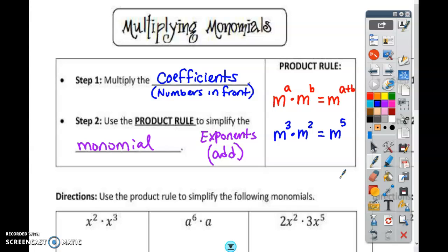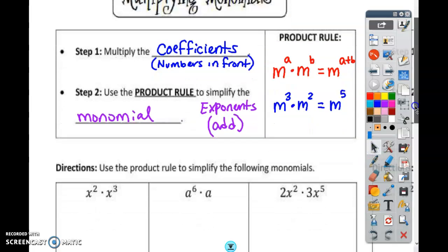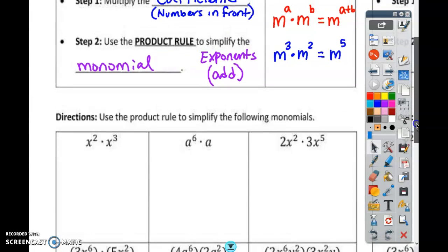So we're going to practice some and then you're going to do some by yourself in Delta Math. Let's go ahead and do some more examples. Right here, x², x³. This one's to the second power, this one's to the third power. When I'm multiplying, what happens to my 2 and my 3? You add them. So what's 2 plus 3? 5. So my answer is x to the fifth power.